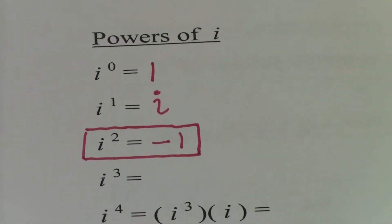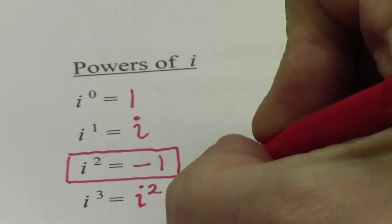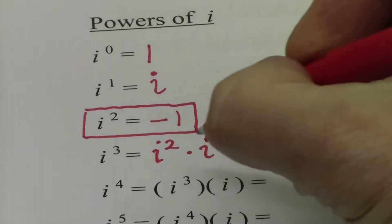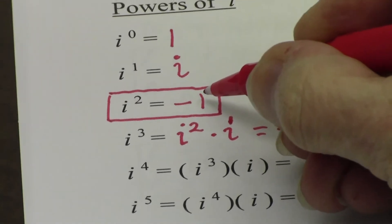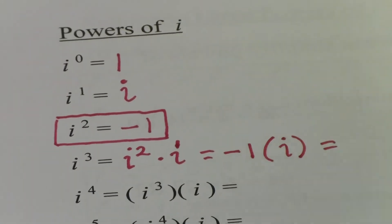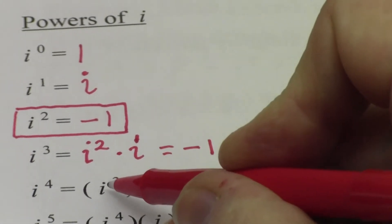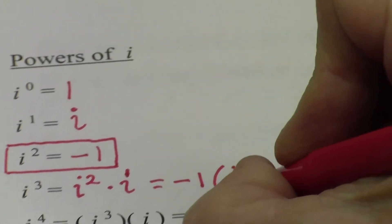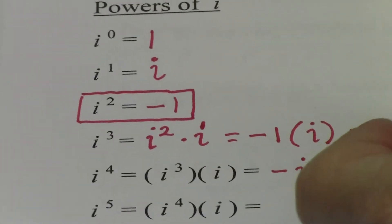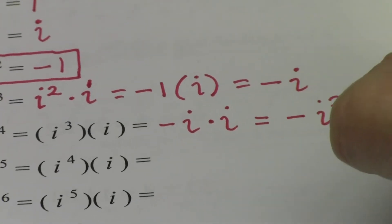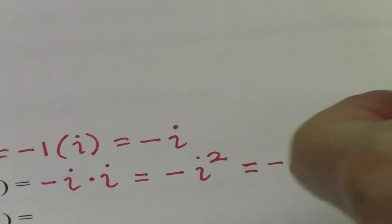Starting with i cubed, I like to look back at what came before. i cubed is the same as i squared times another i. i squared times i equals negative one times i, which is negative i. Then i to the fourth power is i cubed times another i, which is negative i times i — that's the opposite of i squared. Since i squared is negative one, the opposite is positive one.